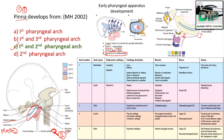Meckel's cartilage at the base of the mandible arises from the first pharyngeal arc. The hyoid bone arises from the second and third pharyngeal arcs — the upper part from the second, and the lower part from the third pharyngeal arc. We already discussed the mnemonic: mono means one for Meckel's cartilage, and Reichert's cartilage from the second pharyngeal arc.